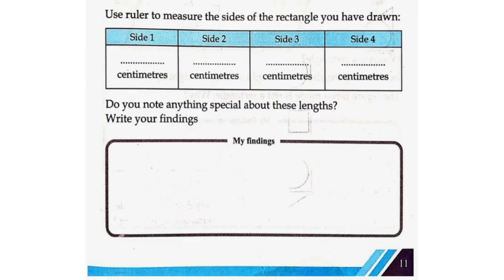Use ruler to measure the sides of the rectangle you have drawn. Side 1: 4 cm. Side 2: 6 cm. Side 3: 4 cm. Side 4: 6 cm. Do you note anything special about these lengths? Write your findings. The opposite sides of the rectangle are equal in length.